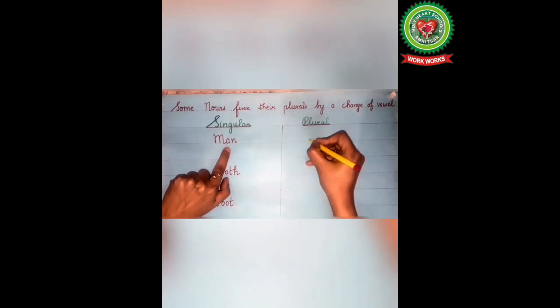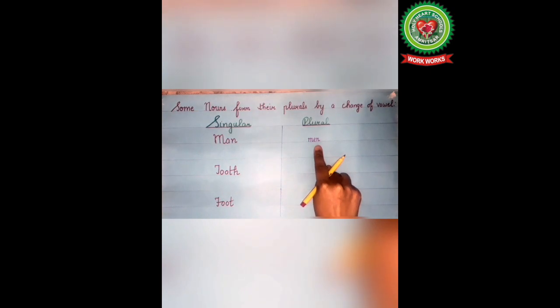Children, the first example is man. In this singular noun, A is a vowel. We will change this vowel into E, that is MEN, to make it plural. So MEN is the plural noun of this singular noun.